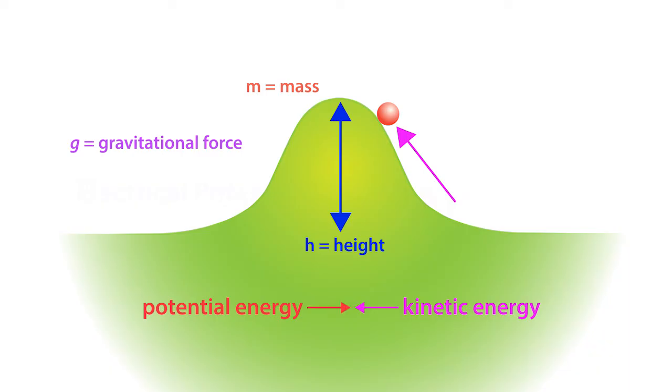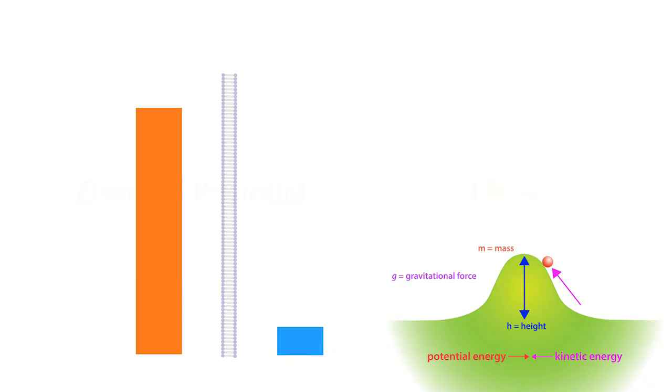The Nernst equation describes a very similar process for the movement of charged particles like sodium, potassium, or chloride ions across the cell membrane.